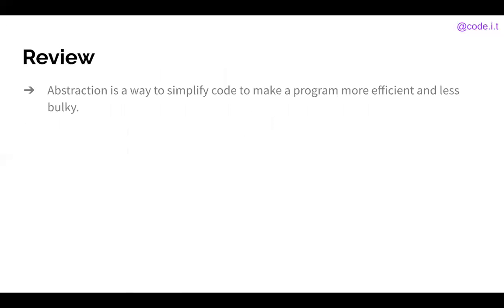So just to review, abstraction is a way to simplify code to make a program more efficient and less bulky. It can take many different forms. You just have to know what you're looking out for and as you get more experience in each programming language, it'll become more and more clear to you. And abstraction is really helpful when a task must be repeated at different times in the program. It allows you to just have a smaller amount of code in place instead of having to write out every single step, like we talked about with the coffee maker.